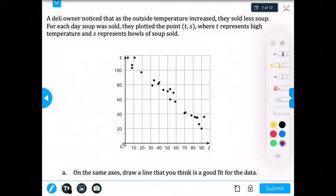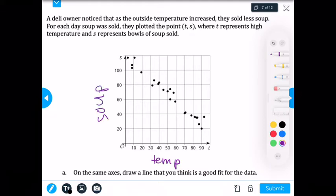On the axis, draw a line of best fit that you think is a good fit for the data. So if we see right here, our data as we're increasing, this was our temperature and this was soup. As our temperature was increasing, our soup sales were decreasing, which kind of makes sense. I don't think I would want to eat soup on a 90 degree day, but that's just me.